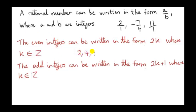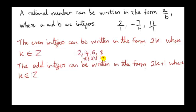Notice that these numbers can be written as 2 times some integer k, where k is an integer, meaning it belongs to the set Z. You see that 6 is just 2 times 3, 4 is just 2 times 2, and 8 is 2 times 4.